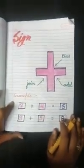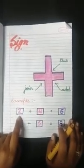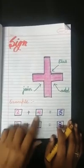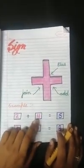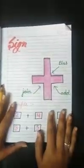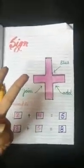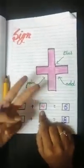Now we'll do some examples of addition. The first number is two and the second number is four. We will do addition with our hands. First, show your fingers. I am taking two fingers for the number two, and then four fingers for the number four.